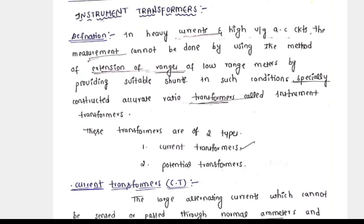Let us study instrument transformers. The transformer which is used in conjunction with an instrument is known as an instrument transformer. Instrument means either a meter or any instrument — that means voltmeter, ammeter, or wattmeter — and in conjunction with that we are using the transformer.